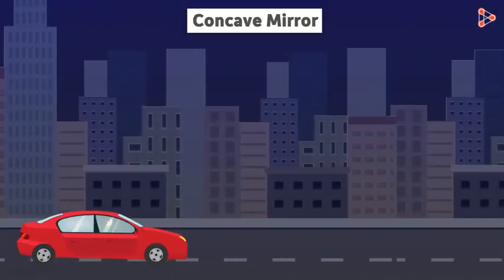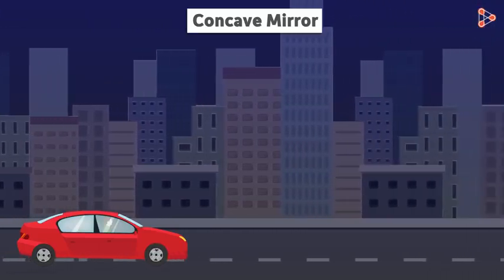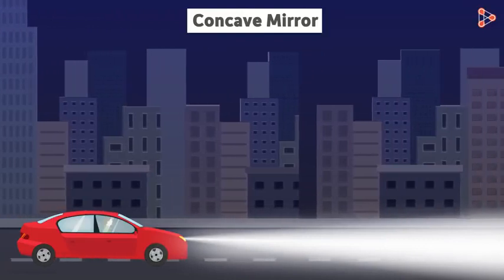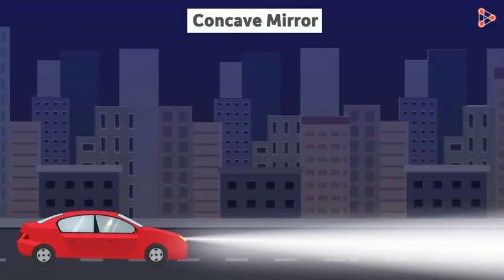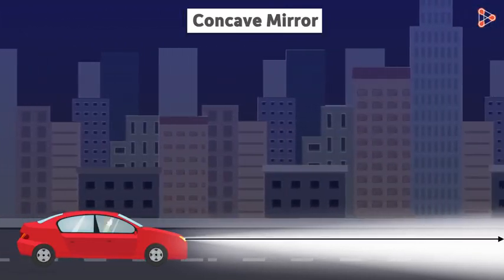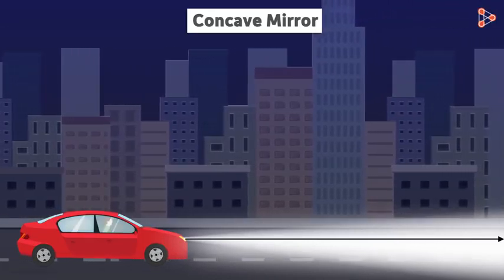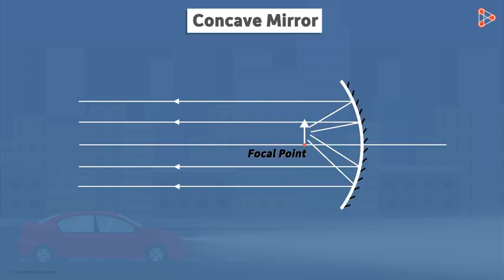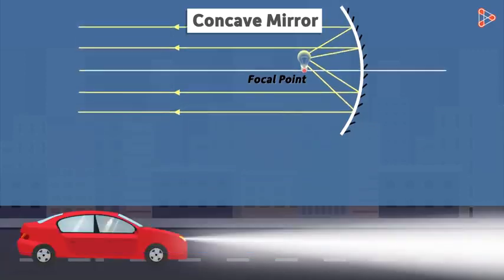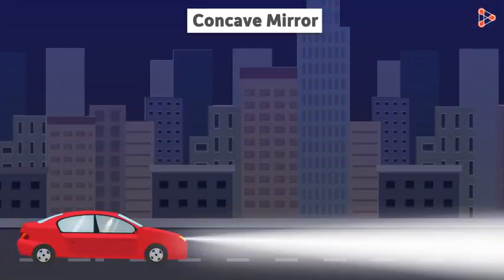One more place where concave mirrors are used is the headlights of automobiles. Headlights help us to see things in front of us in dark or dim light, and we want to see things at a sufficiently large distance ahead. We know that when the object is kept at the focal point, the light rays after reflection travel parallel to each other for a long distance. So if we keep a light source, say a bulb, at or near the focal point of a concave mirror, almost all the rays from the bulb after reflection will travel in one direction, giving us a distant view of the road ahead.